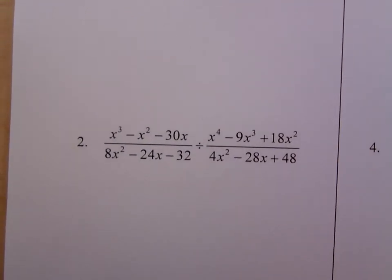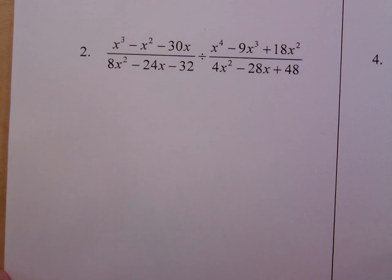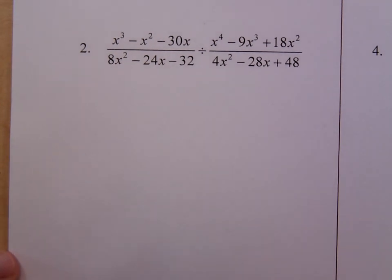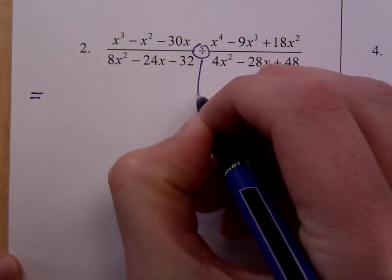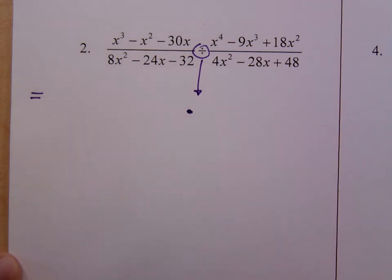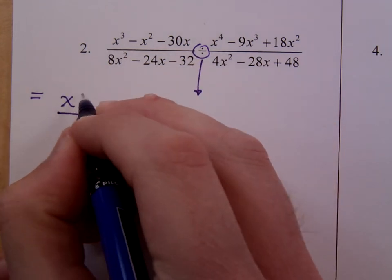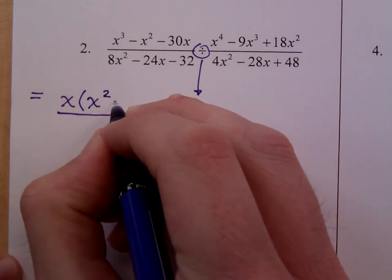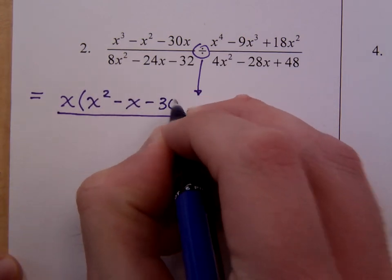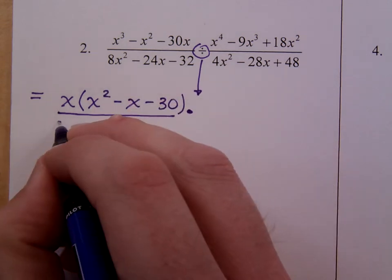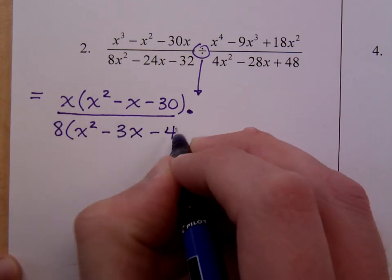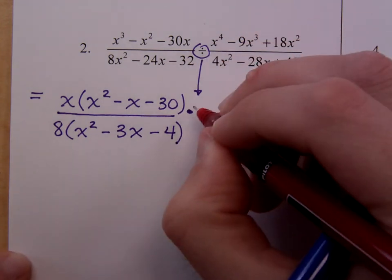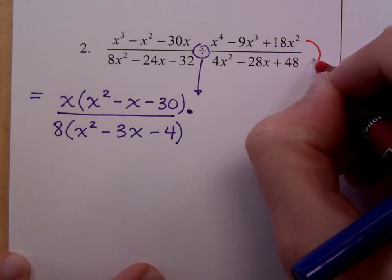In problem number 2, this is a division problem. When you are dividing fractions, you have to multiply times the reciprocal. I'm going to change this to multiplication and take out common factors that I see. These guys have a common factor of x, so that leaves us with x squared minus x minus 30. In this denominator, there's a common factor of 8, and I'm left with x squared minus 3x minus 4.